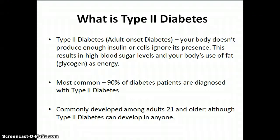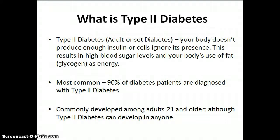So what is type 2 diabetes? Type 2 diabetes, which is an adult onset diabetes, is when your body doesn't produce enough insulin or cells ignore its presence. This results in high blood sugar levels and your body's use of fat as energy. Type 2 diabetes is the most common — 90% of diabetes patients are diagnosed with type 2, and it is commonly developed among adults 21 and older, although type 2 diabetes can develop in anyone.